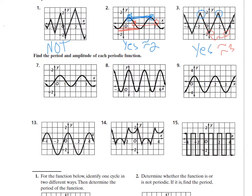Now, find the period and amplitude. Amplitude is defined as half of the maximum y value minus the minimum y value. For this function, the period is about two. The amplitude is — it's going from negative one to one — so it's half of one minus negative one. The height of the wave is two, so half of that is one. The amplitude is one.